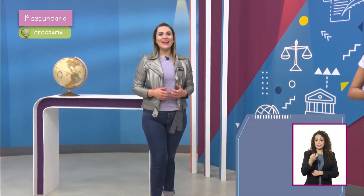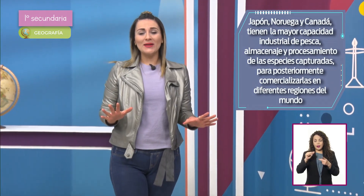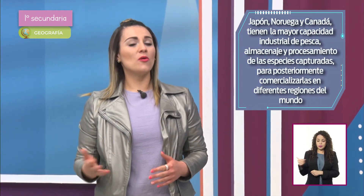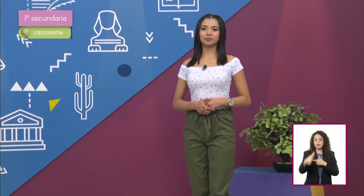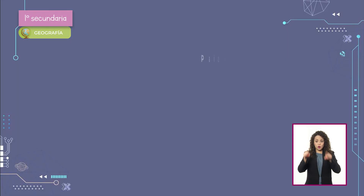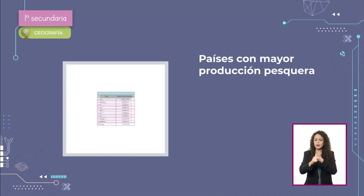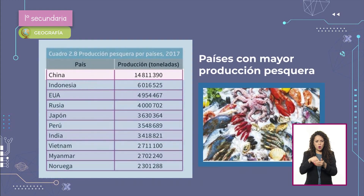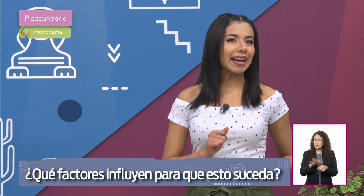Japón, Noruega y Canadá tienen la mayor capacidad industrial de pesca, almacenaje y procesamiento de las especies capturadas, para posteriormente comercializarlas en diferentes regiones del mundo. En el cuadro que aparece en pantalla podemos identificar los países con mayor producción pesquera en el año 2017. En los primeros lugares se encuentran China, Indonesia y Estados Unidos de América. Los factores que influyen son las corrientes marinas frías, que transportan gran cantidad de plancton —el principal alimento de los peces—, la forma de las costas y la extensión de la plataforma continental.